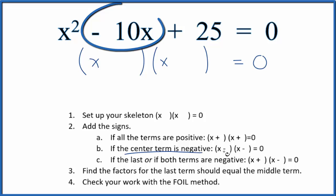If the center term is negative, we use this format here. We'll just have two negatives - put a negative here and a negative here. Now once we do that, we're going to look at the factors for the last term.